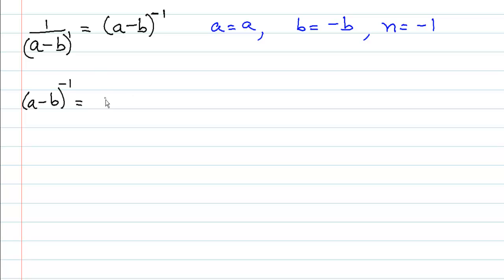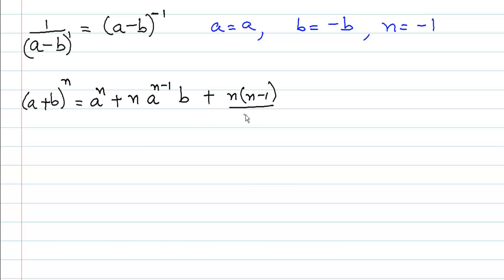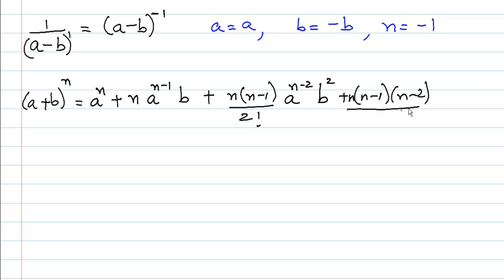Let me write the formula once more for clarity. (a + b)^n = a^n + n·a^(n-1)·b + [n(n-1)/2!]·a^(n-2)·b² + [n(n-1)(n-2)/3!]·a^(n-3)·b³ + ... and of course this goes on and on.